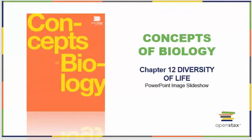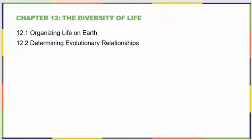Chapter 12 covers the diversity of life. This chapter only has two sections: 12.1 Organizing Life on Earth, and the second covers how we determine evolutionary relationships.